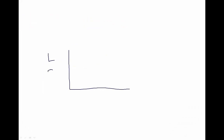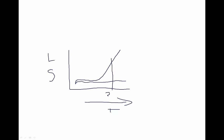On a graph of lecithin and sphingomyelin levels over pregnancy, sphingomyelin remains relatively constant throughout, while lecithin is flat early and then shoots up late in pregnancy when the lungs mature. When this ratio becomes about 2 to 1 — at approximately 35 weeks — the lungs are considered mature.